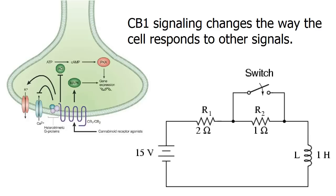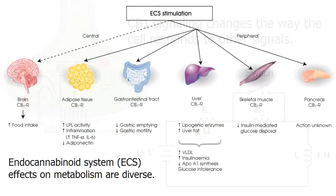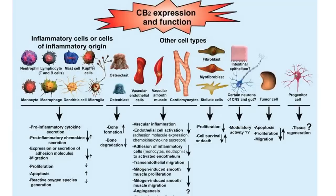We'll talk later about the consequences of that. In the brain, endocannabinoids binding to CB1 receptors change the way our brains store memories, set our mood, tell us we're hungry, and sense pain. However the second receptor, CB2, uses different endocannabinoids to change the way our immune systems work, including making cells self-destruct, or produce damaging free radicals. They can also change the tightness of our blood vessels and how we respond to bacterial infections or other invaders.